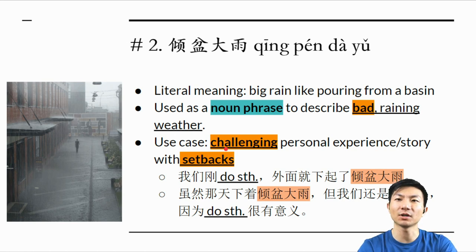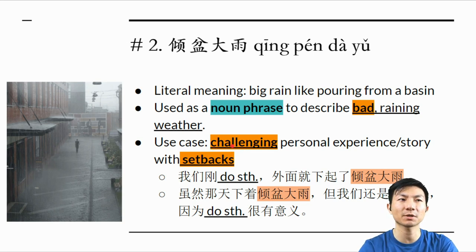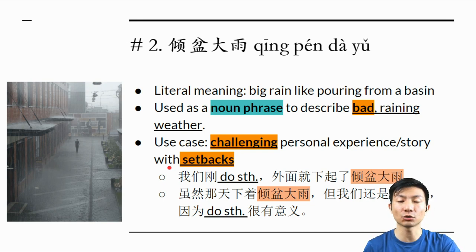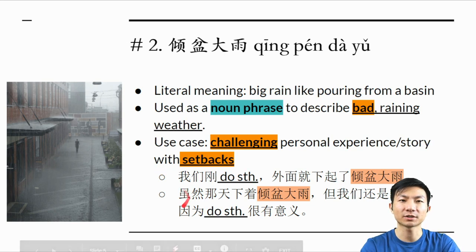The use case is very similar to 万里乌云, but it's kind of the opposite of it. It's going to set up a tone for your story — like it's a challenging personal experience and there are going to be some setbacks. The benefit is that your story can be about how you overcome those challenges or setbacks.